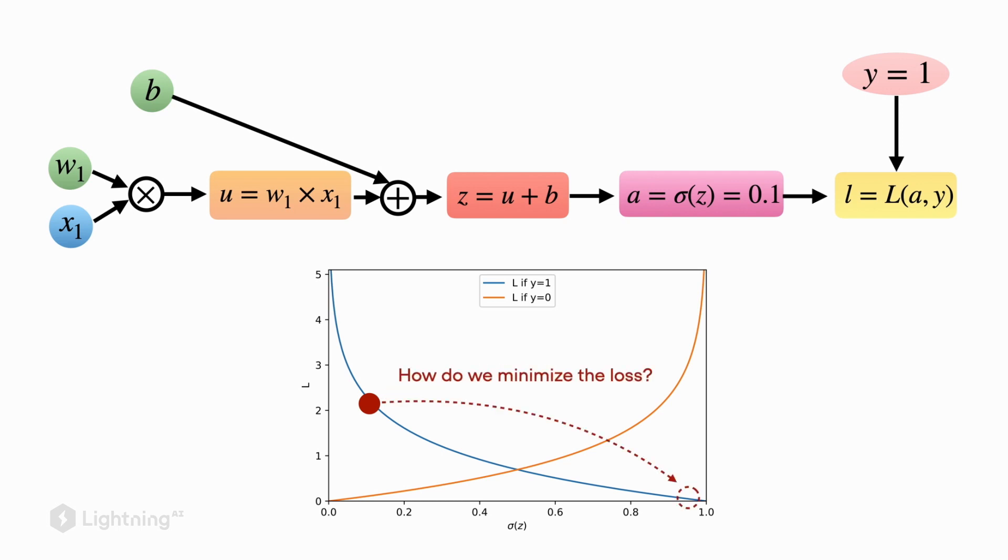So ideally, we want this loss value to be as small as possible. So we want to move this activation output from 0.1 close to 1. We can do that by updating the model parameters, the weight w1 and the bias unit. And the process of updating these values w1 and b to minimize the loss, that's the logistic regression training. And we will see how that works in the upcoming videos.